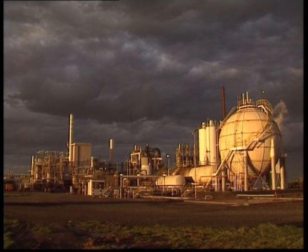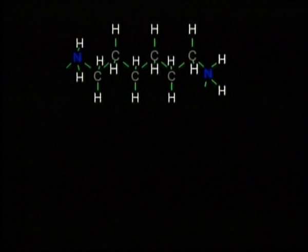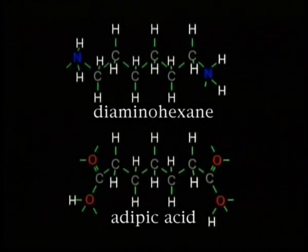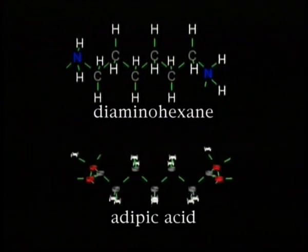With some monomers, though, something different happens. Here's an example. These two monomers, diaminohexane and adipic acid, react together to form one type of nylon.